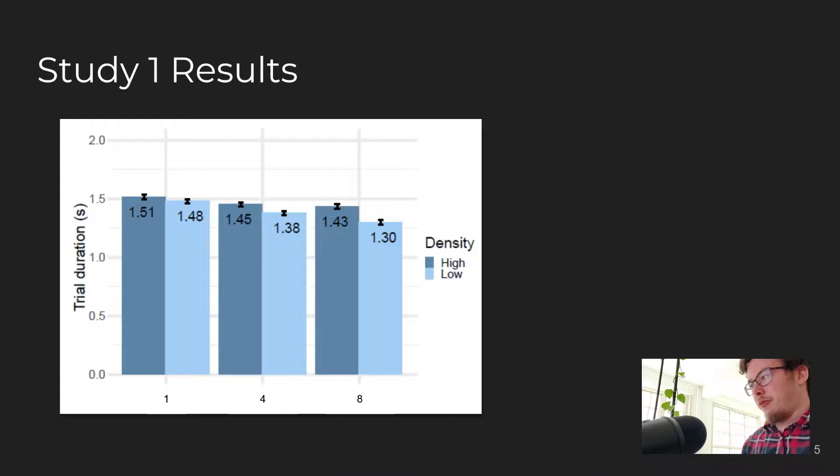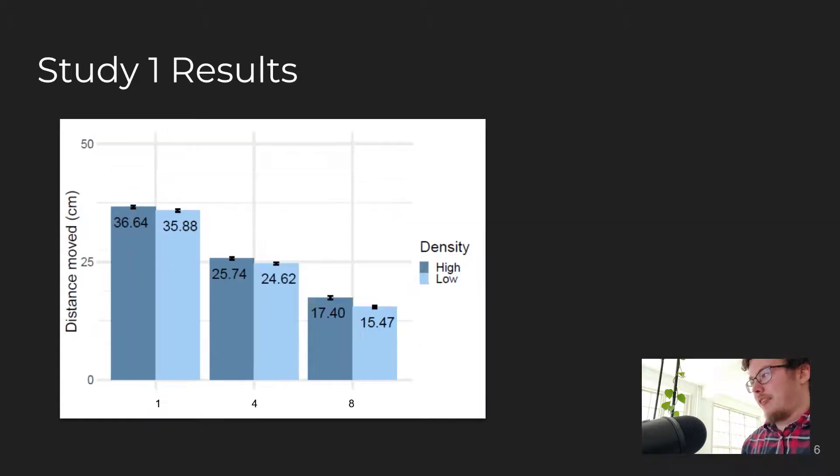As we can see here, participants were significantly faster in selection time with more hands, both in low and high densities of distractors. Similarly, participants moved significantly less with more hands in low and high densities, moving more than twice as little with eight hands as with one.